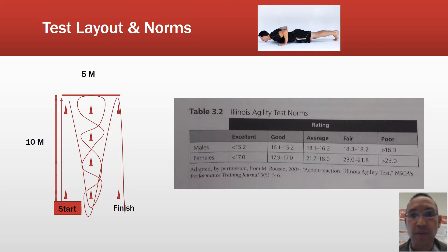Additionally, Ruzin in 2004 set norms for males and females for the Illinois Agility Test.